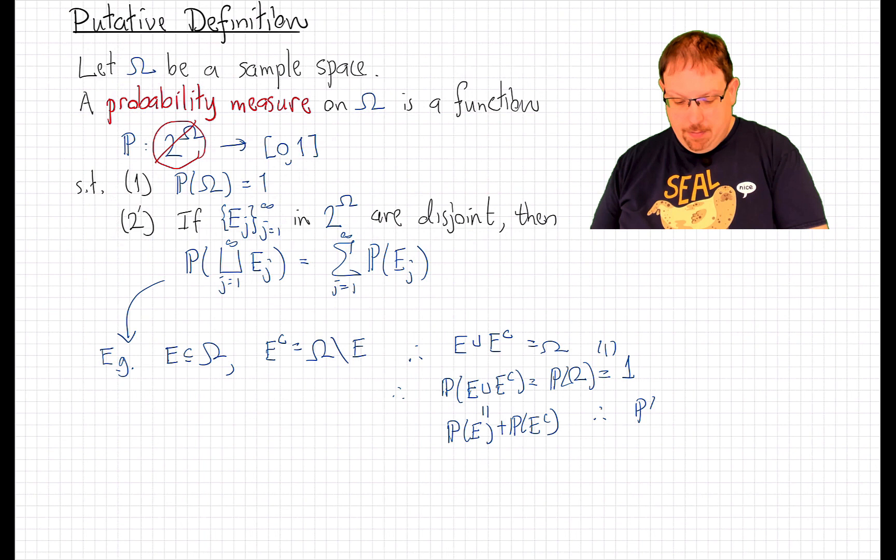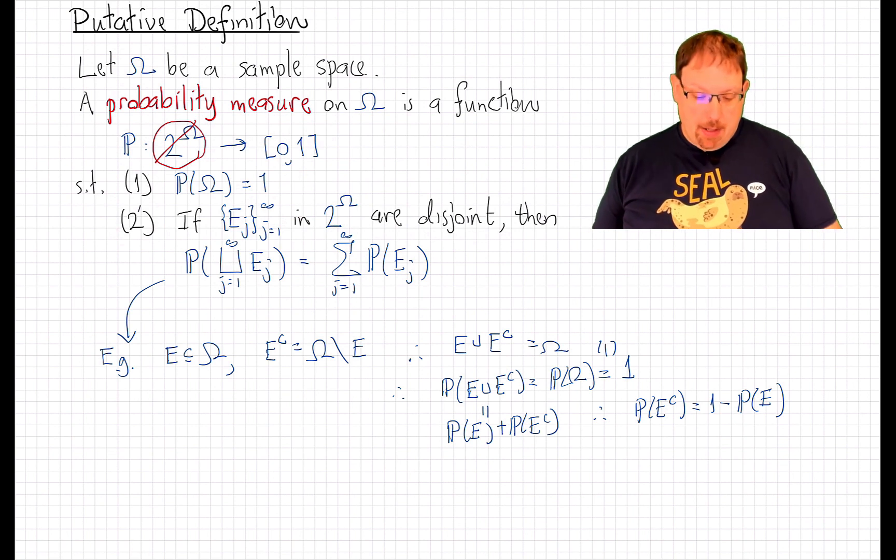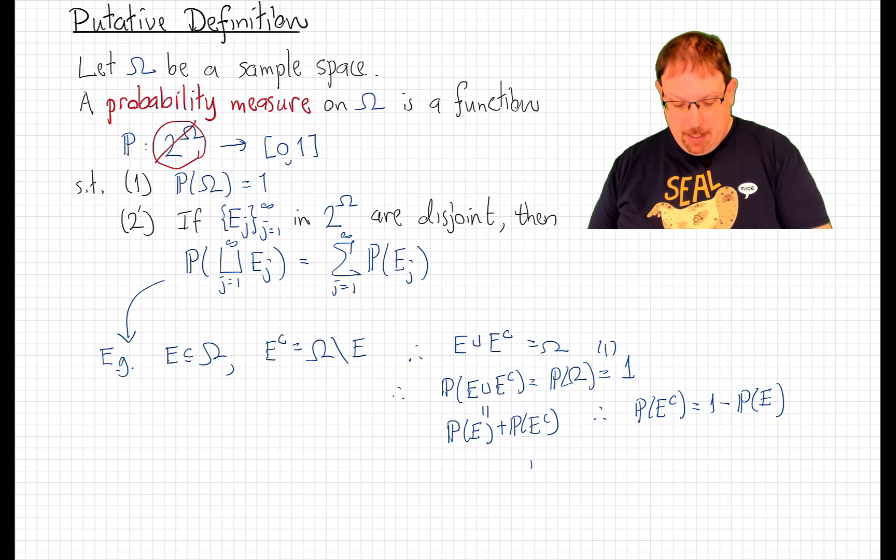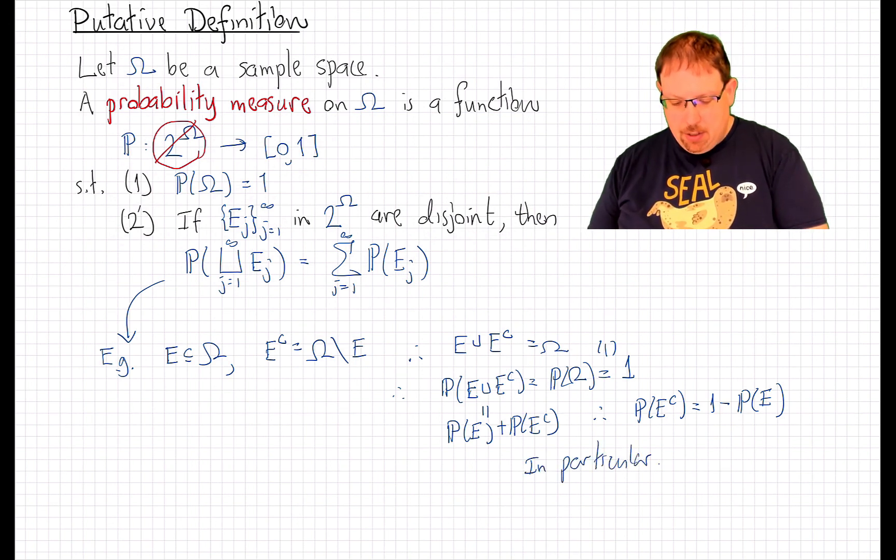And therefore, the probability of E complement is 1 minus the probability of E, one of the first day properties of probability in an undergraduate probability course. In particular, if we take E to be the full sample space omega,